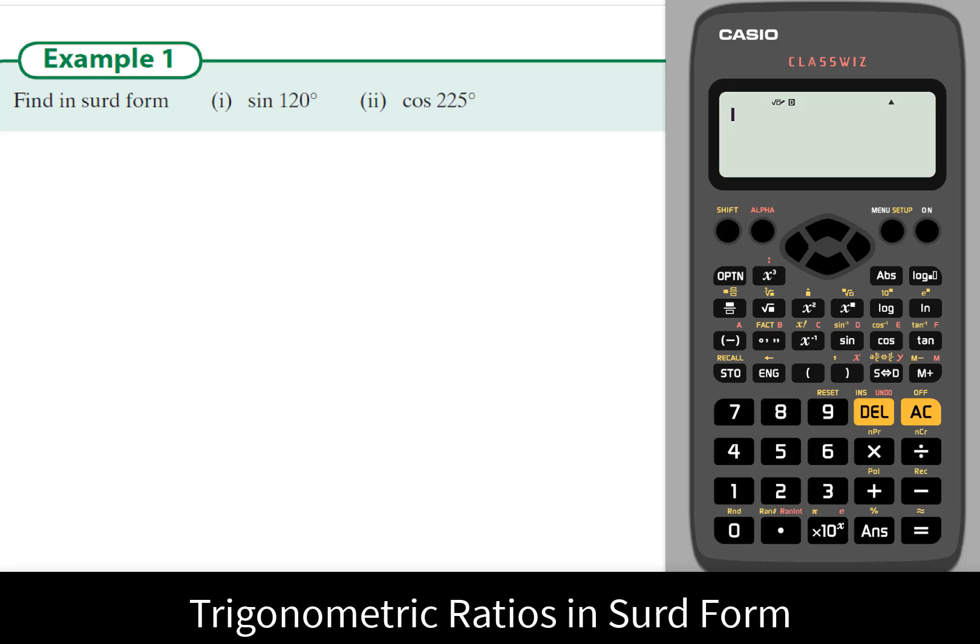Trigonometric ratios in surd form. This question is asking us to find in surd form sine of 120 degrees. With a modern calculator, if you just write in sine 120 degrees, the calculator gives the answer automatically in surd form, so it makes no sense really to be asked to do much more than this. The answer is root 3 over 2. This is the most accurate answer.